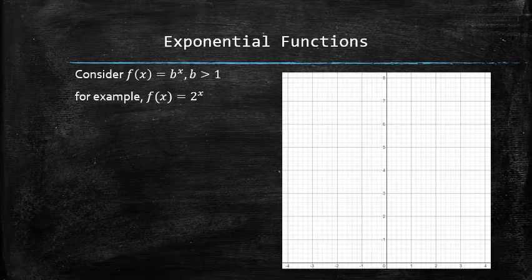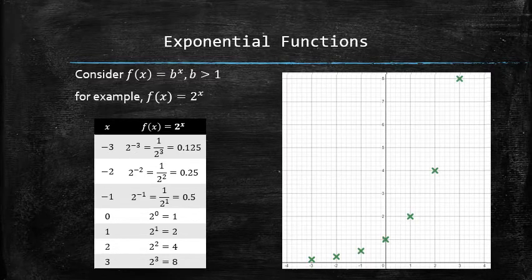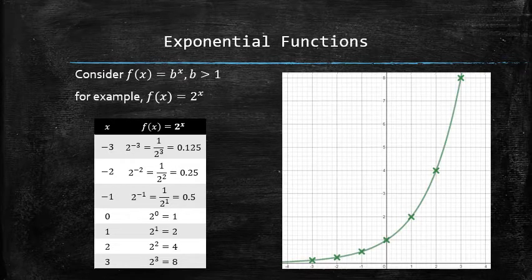If this is your first time graphing this function, the best approach is to create a table of inputs and outputs. Since we are familiar with the exponentiation, we should be able to easily figure out the outputs for some small integer values and plot the points on the coordinate plane, then connect the dots with a line to finally obtain the graph of the function.